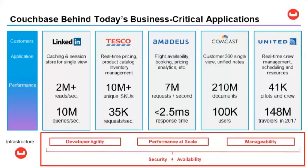Comcast, like LinkedIn, also needs a single view across all their customers — from the call center to the technician in the truck outside your house. Today they have 100,000 internal users accessing over 200 million documents. At United, they have an app for employees and the 41,000 pilots and crew members who use Couchbase every day to make sure planes and flights arrive safely. IDC independently interviewed seven of our customers and released a study highlighting: 40% faster response time, 274% five-year return on investment, and 37% more efficient database management.